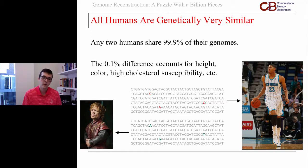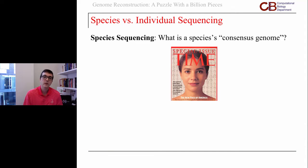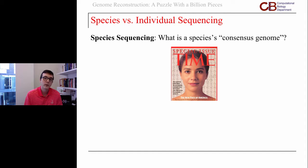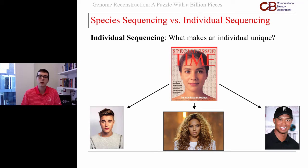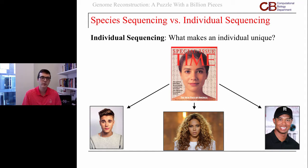There are two questions we have immediately once we know this. First, what is the consensus genome of all humans? If we learn what this is, then we know 99.9% of what it means to be human. And then, once we know that 99.9%, what's in the 0.1%? What is it that makes you unique, and what is it that separates you from the typical person?